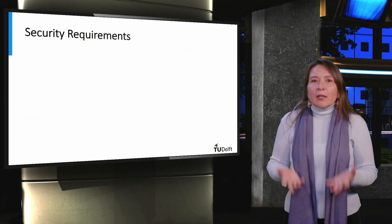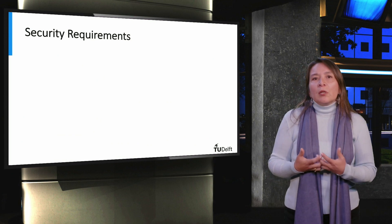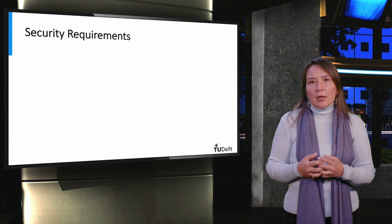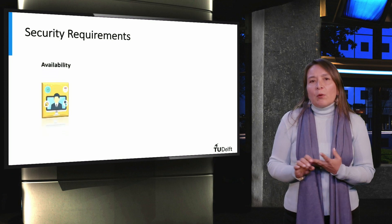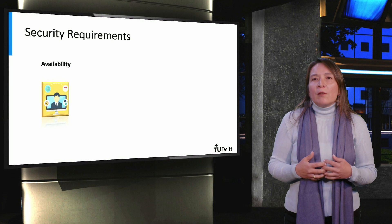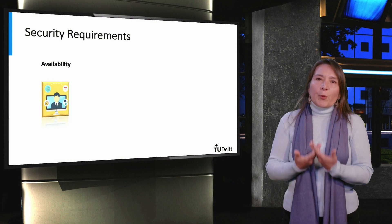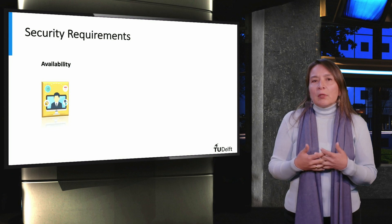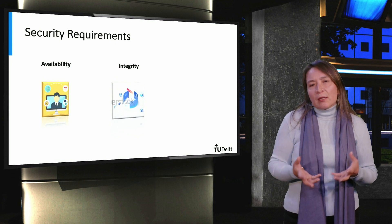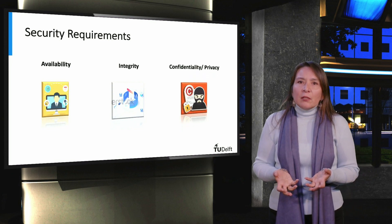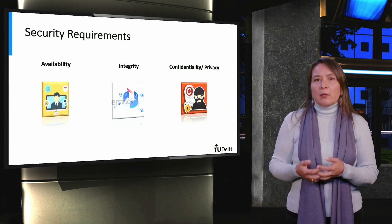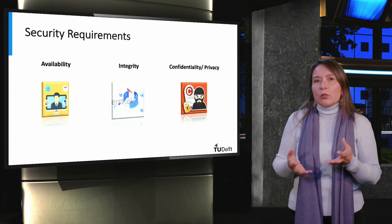Continuing with the learning objectives, some of the key terms are known as the security triad. Availability guarantees that the computer resource, and in particular information, will be accessible and usable for a legitimate user according to their profile, at the required time, and without degradation. Integrity refers to the property of accuracy and completeness that information possesses. Confidentiality, or privacy, is a property or security requirement that requires information to be accessed by each user based on what they must see according to their area of business.